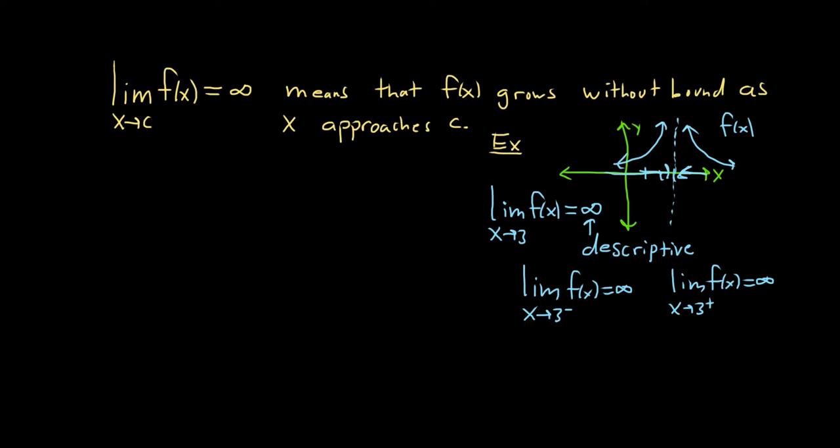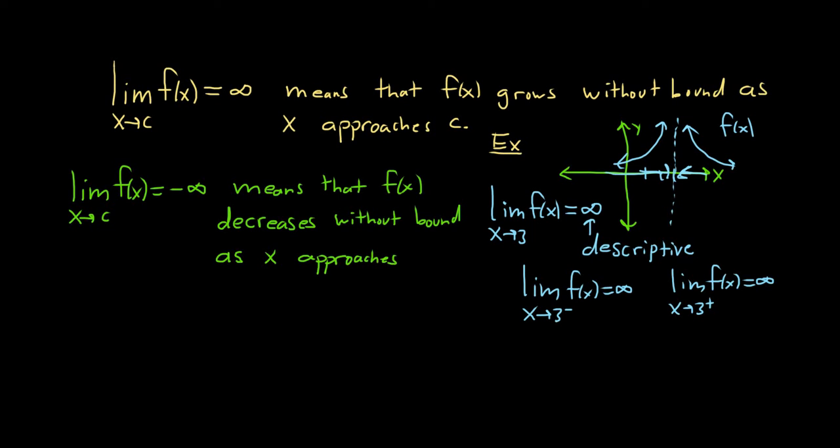Likewise, we can do the same thing for negative infinity. If we write limit x approaches c of f of x equals negative infinity, this means this time it goes down forever. The graph will just go down forever. So this means that f of x decreases without bound as x approaches c. So it gets smaller forever.